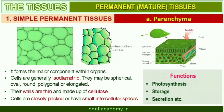Parenchyma forms the major component within organs. The cells of parenchyma are generally isodiametric. They may be spherical, oval, round, polygonal, or elongated in shape. Their walls are thin and made up of cellulose. They may either be closely packed or have small intercellular spaces. Parenchyma performs various functions like photosynthesis, storage, and secretion.